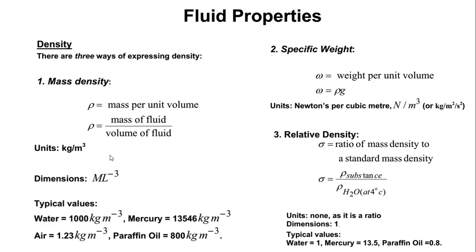The next term is relative density. Relative density has no units because it is the density of the substance divided by the density of water at four degrees Celsius. For example, the relative density of water is equal to one. The relative density of mercury is 13,546 divided by the density of water — giving approximately 13.5 — with no units because it is a relative density.